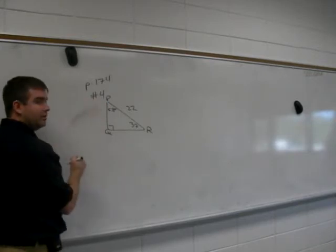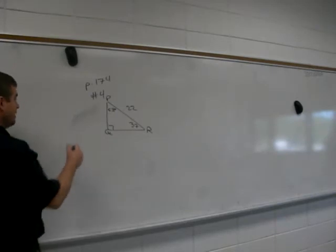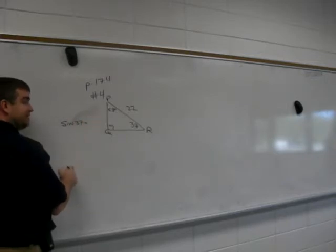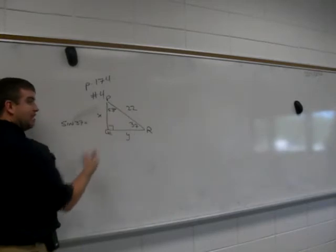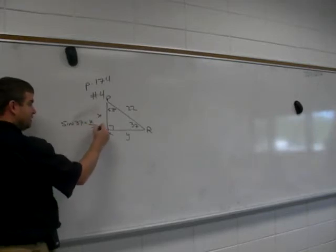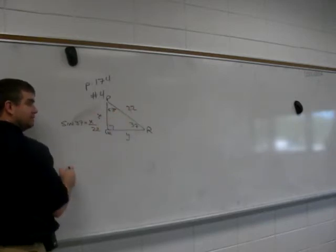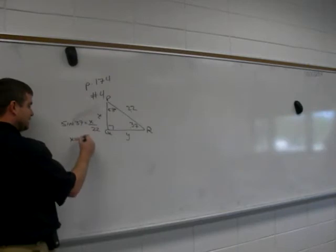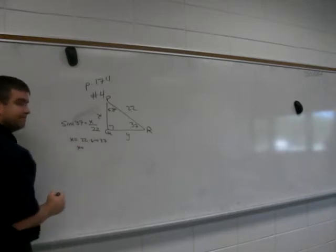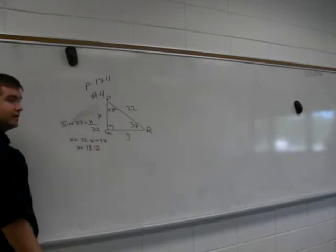So now that we have that down, we can either use the 37 or we can use the 53. If it were me, I would simply say the sine of 37 and go from there. What does the sine of 37 equal? Well, I'm going to put an X and Y here just to help us with some unknowns. What does the sine of 37 equal? X over 22. The opposite side. X is opposite of 37. 22 is the hypotenuse. So in order to solve this, we just say X equals 22 times the sine of 37 on our calculator. What do we get? 13.2. Rounded to the nearest tenth, we get 13.2.